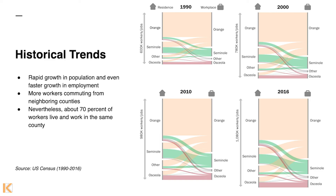On historical trends: before going into the latest data, we wanted to set the stage for how people have been getting around the Central Florida region over the past 30 to 40 years. We went back to 1990 and looked at census data on county-to-county flows, creating the Sankey diagrams you see on the right, showing how many people are flowing from their residences to their workplaces and how that breaks down across the three counties that make up Metroplan Orlando as well as neighboring counties.